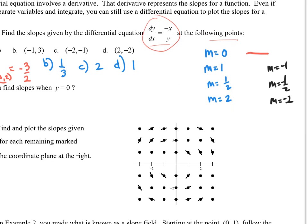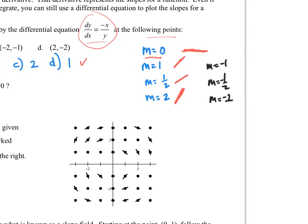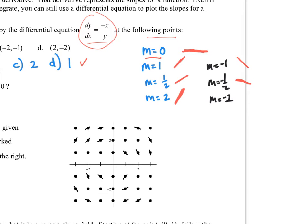Pause this. We're going to take all of the slopes we found and put them on a coordinate plane. Some things to realize: slope equal to 0 means you draw a horizontal line. Slope of 1 is at a 45-degree angle, so 1/2 would be less than that and 2 would be greater. You have to put everything in perspective. I can also have negative slopes — m = -1 would be at 45 degrees going down.